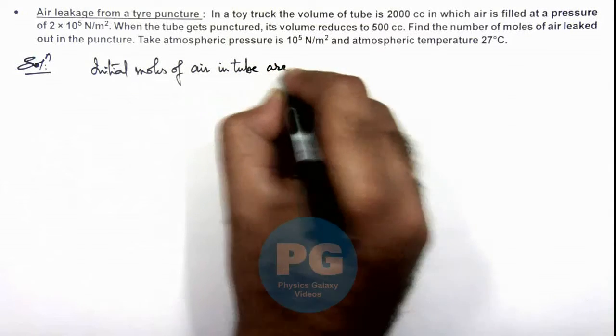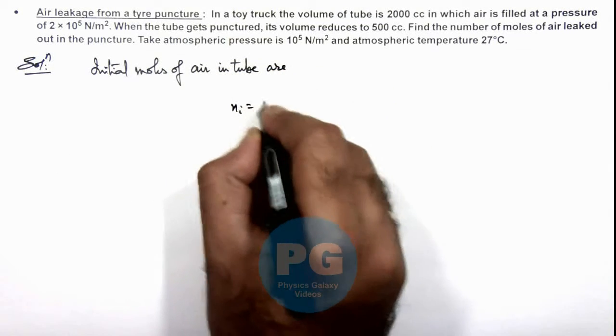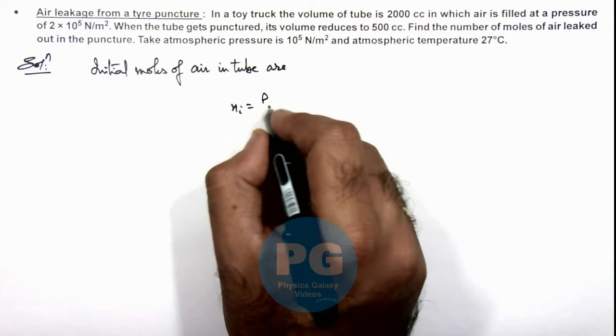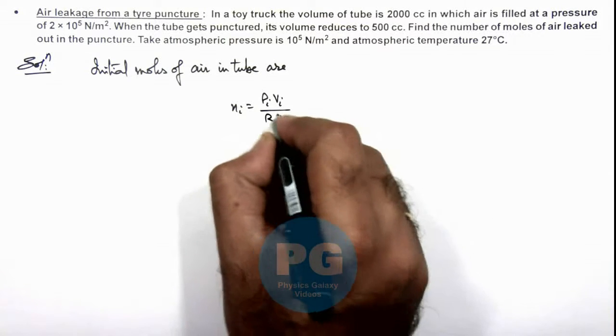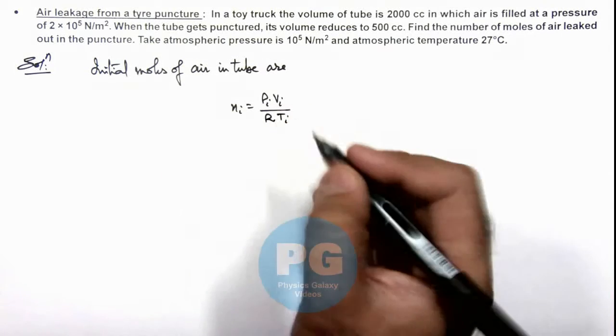We can calculate initial moles as pressure initial, volume initial divided by R multiplied by initial temperature. That is by gas law we are writing.